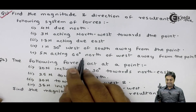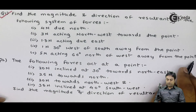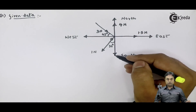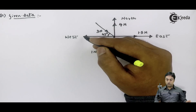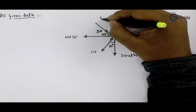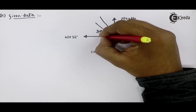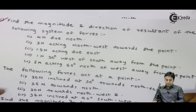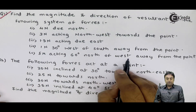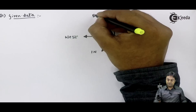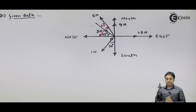The fifth force is 5 Newton acting 60 degrees north of west, away from the point. North of west means it is on the north-west side, with an inclination of 60 degrees. The value of this force is 5 Newton. This completes the diagram we construct from the given data.